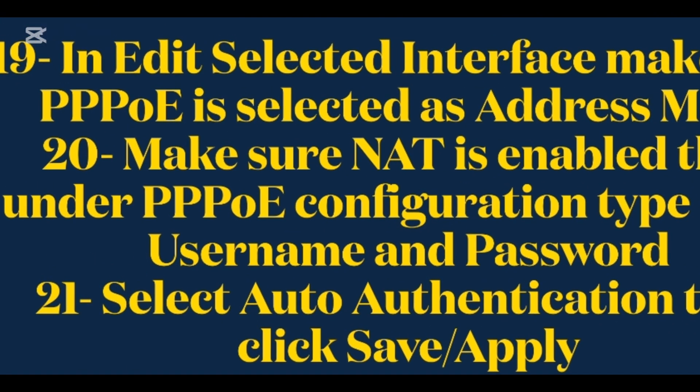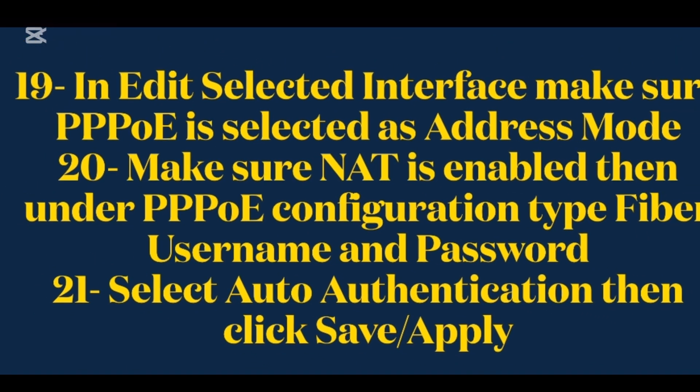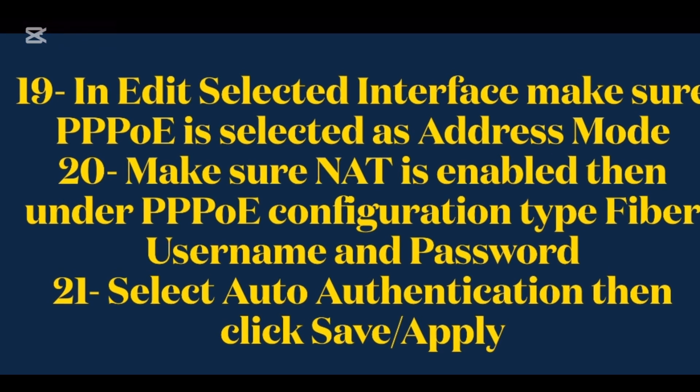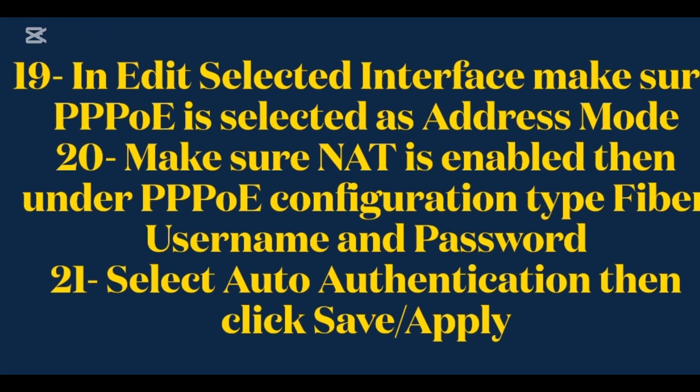In Edit Selected Interface, make sure PPPoE is selected as Address Mode. Make sure NAT is enabled, then under PPPoE configuration, type your Fiber username and password. Select Auto Authentication, then click Save Apply.